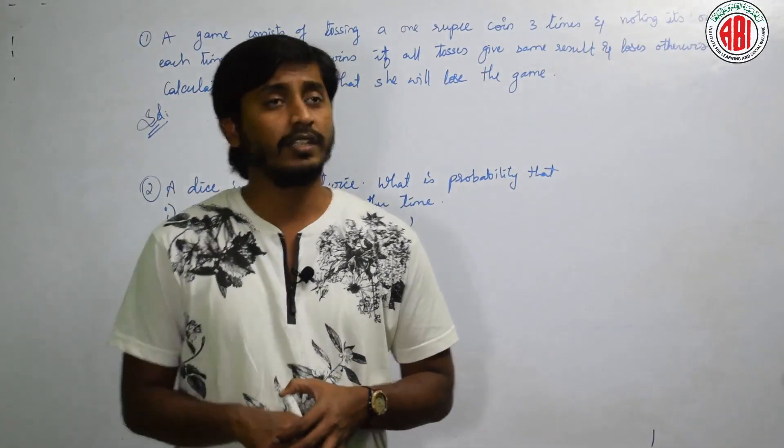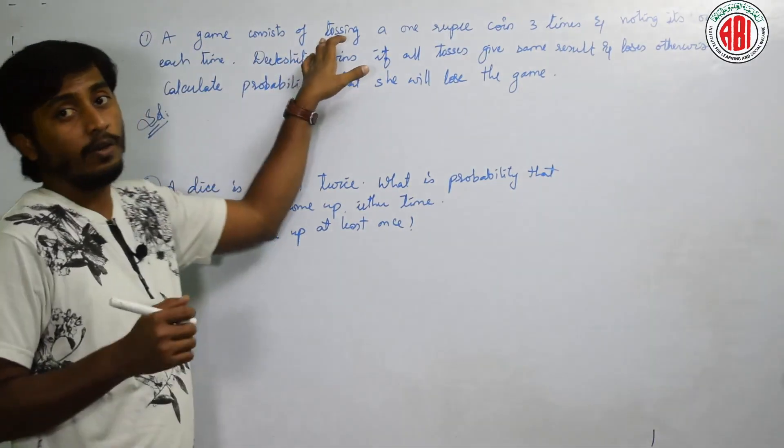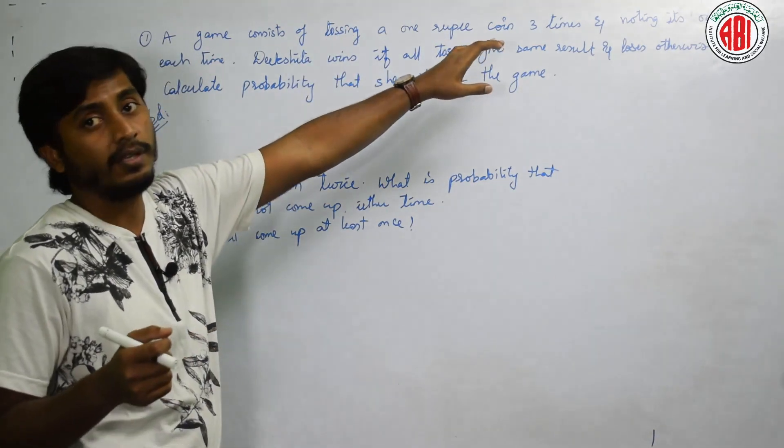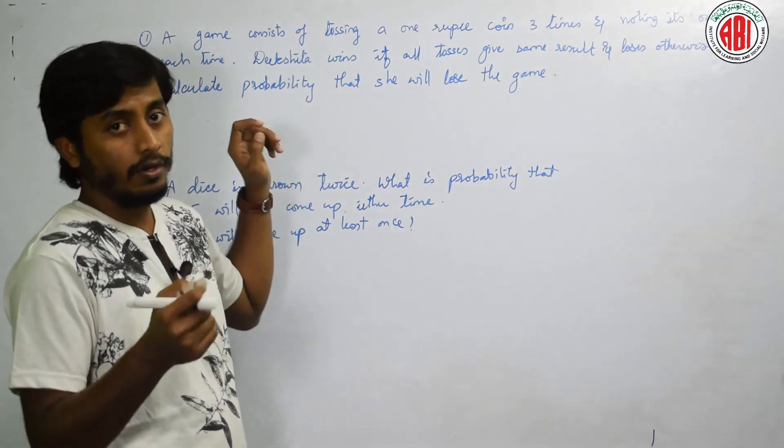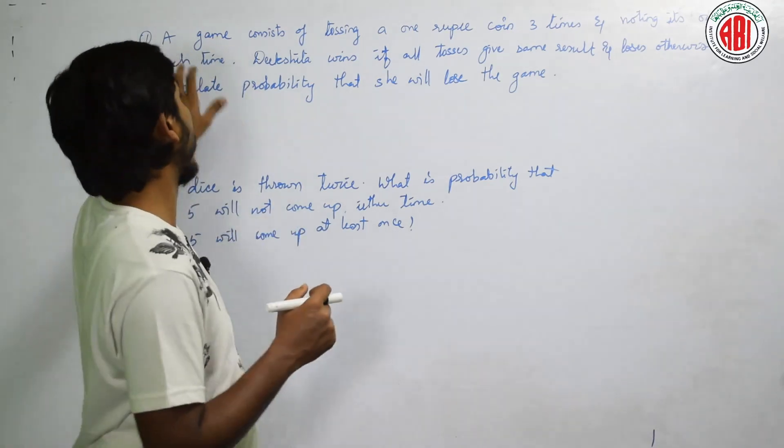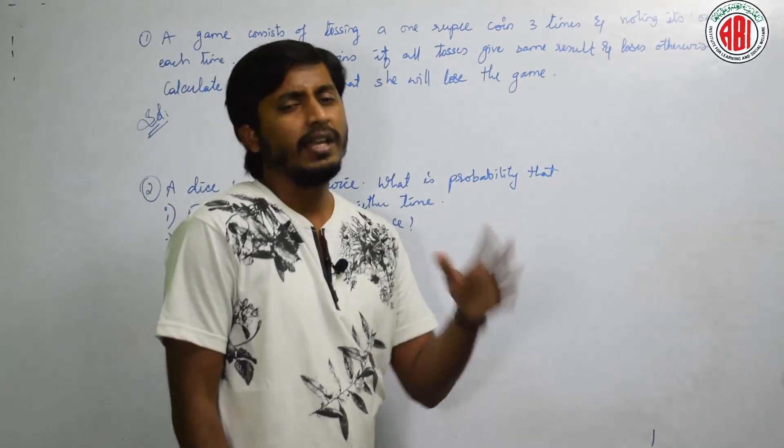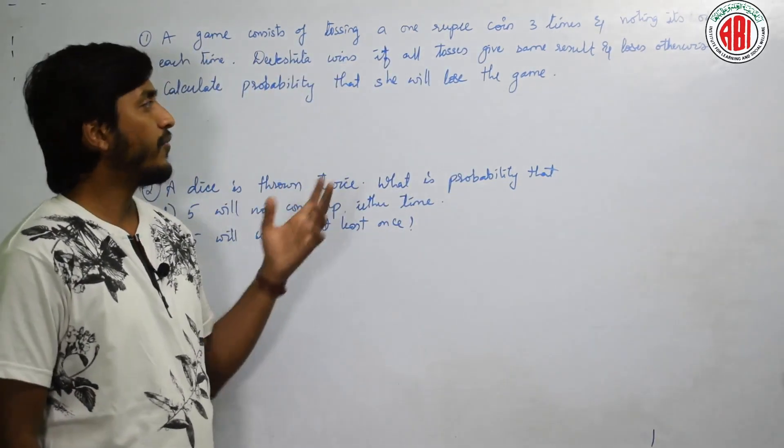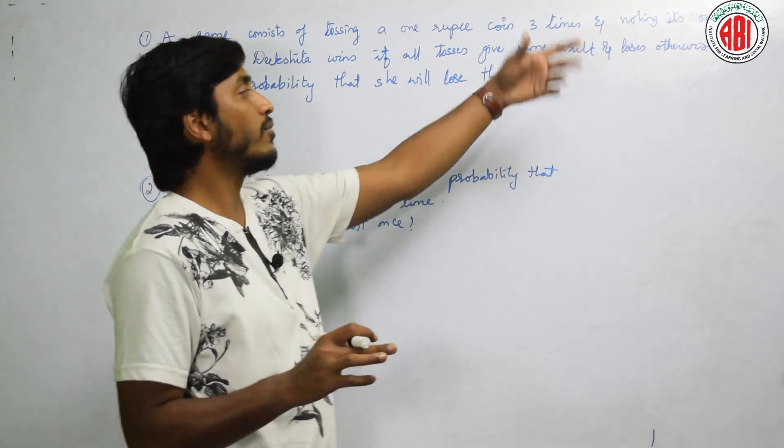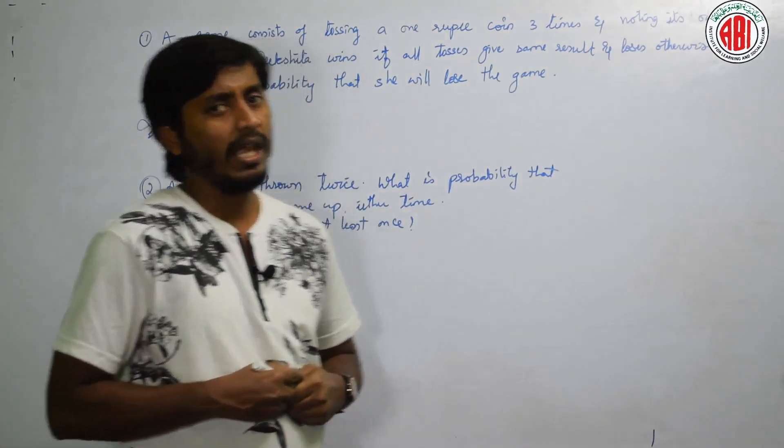Look at the next question here. The question given here is: A game consists of tossing a 1 rupee coin 3 times and noting its outcome. Deekshita wins if all tosses give same result. That is, either all heads or all tails, and loses otherwise. Calculate the probability that she will lose the game. How many coins? 3 coins. Tossing 3 times.